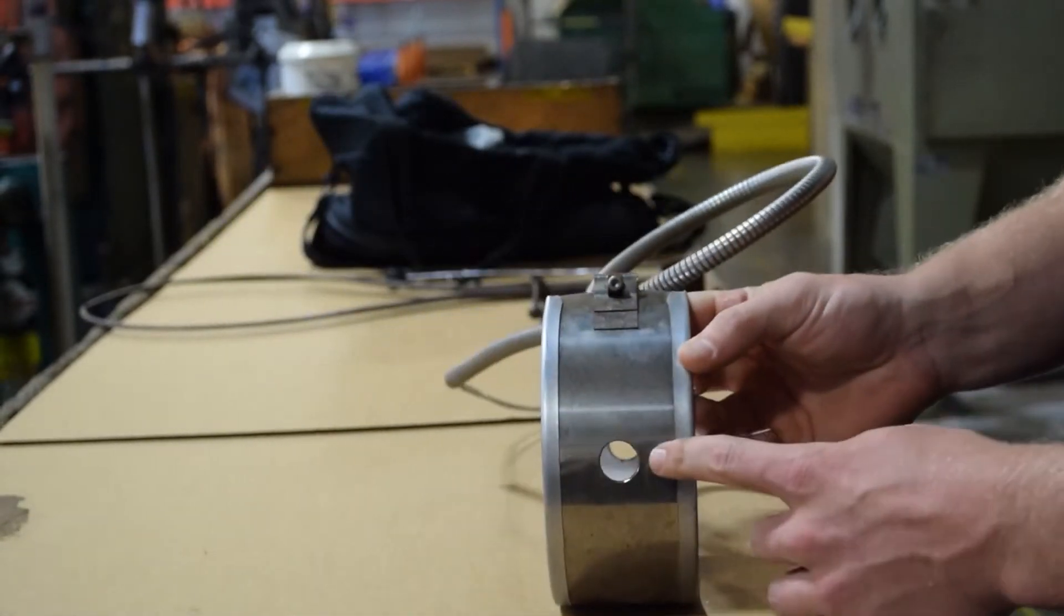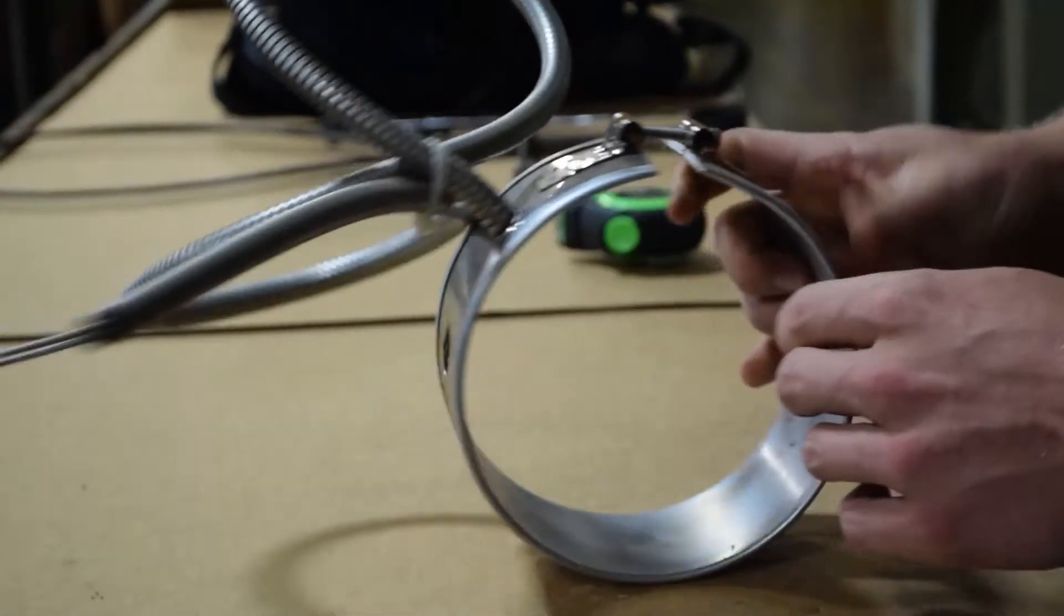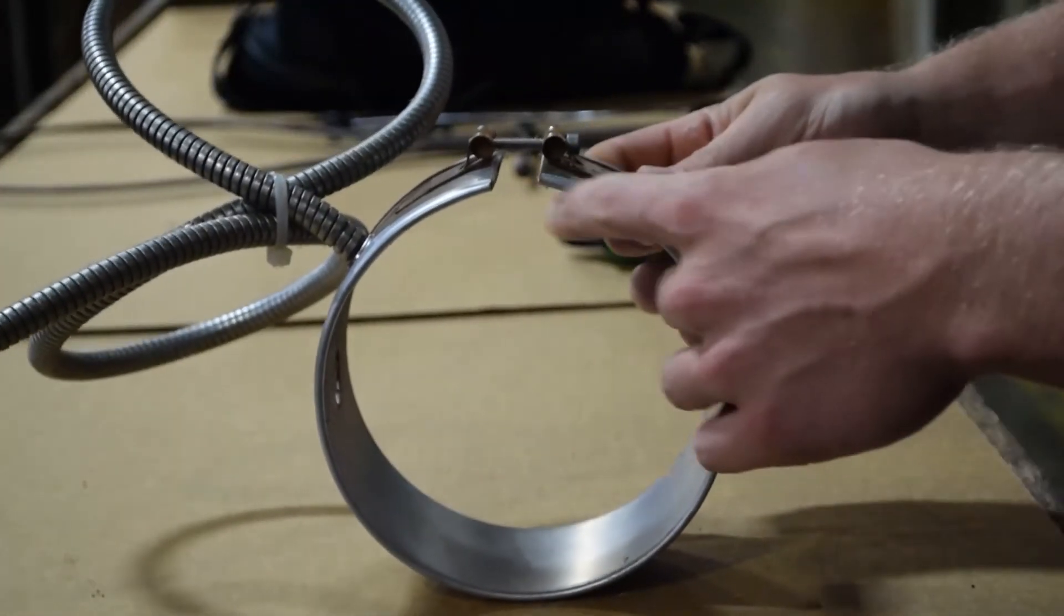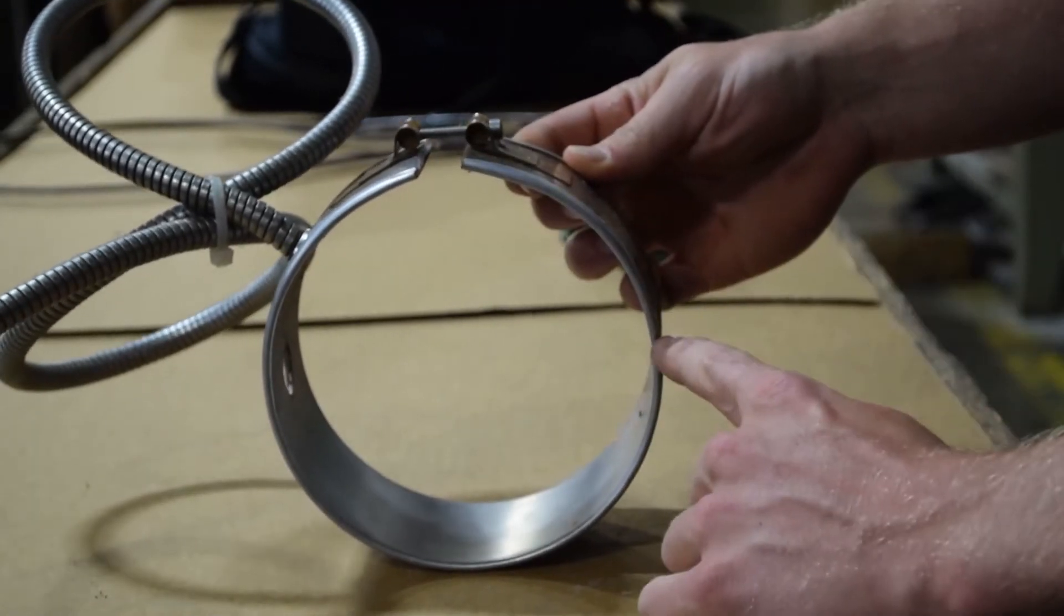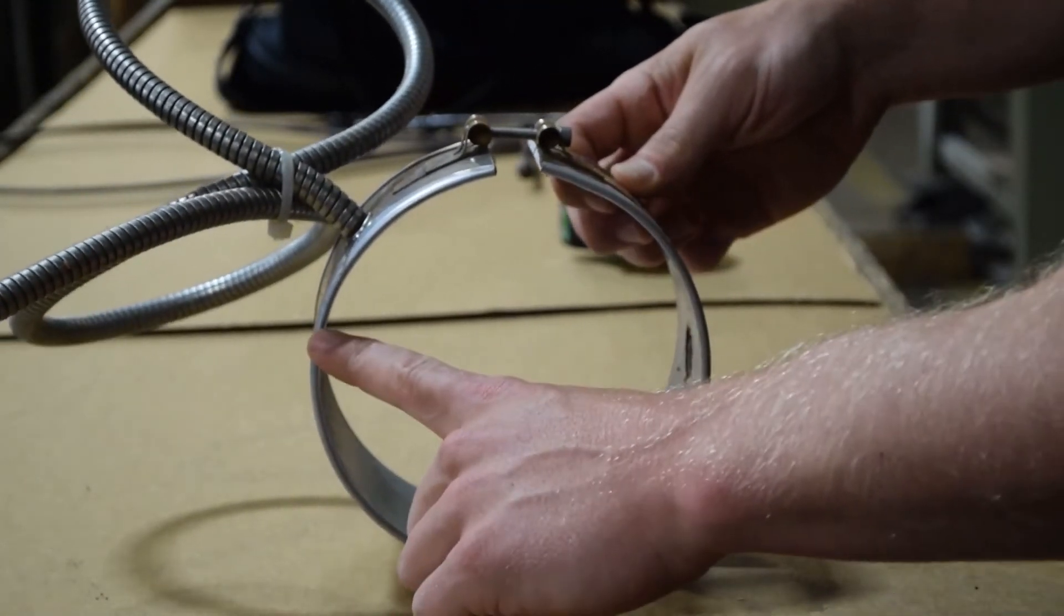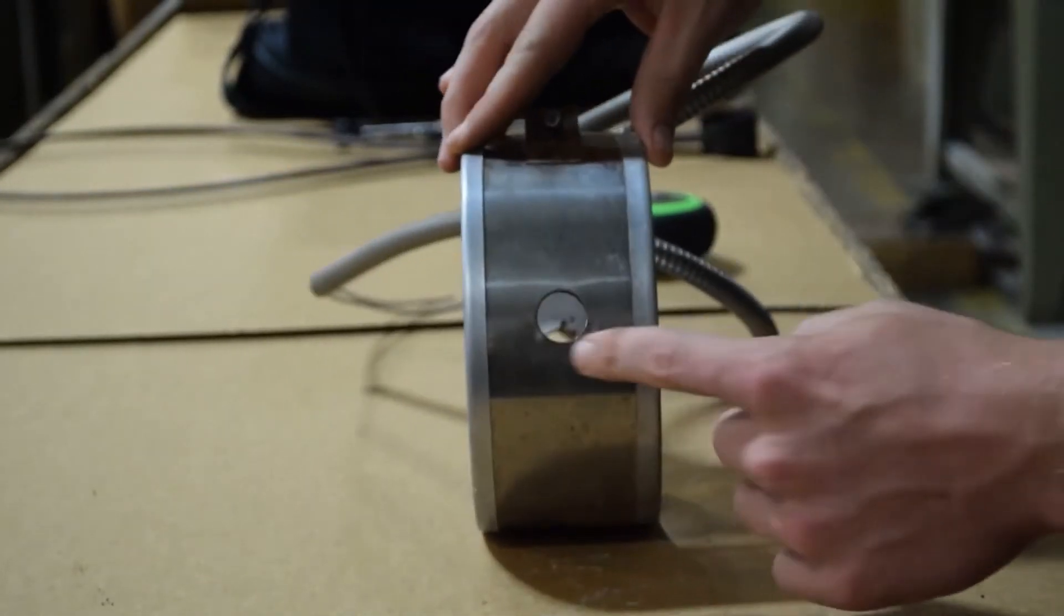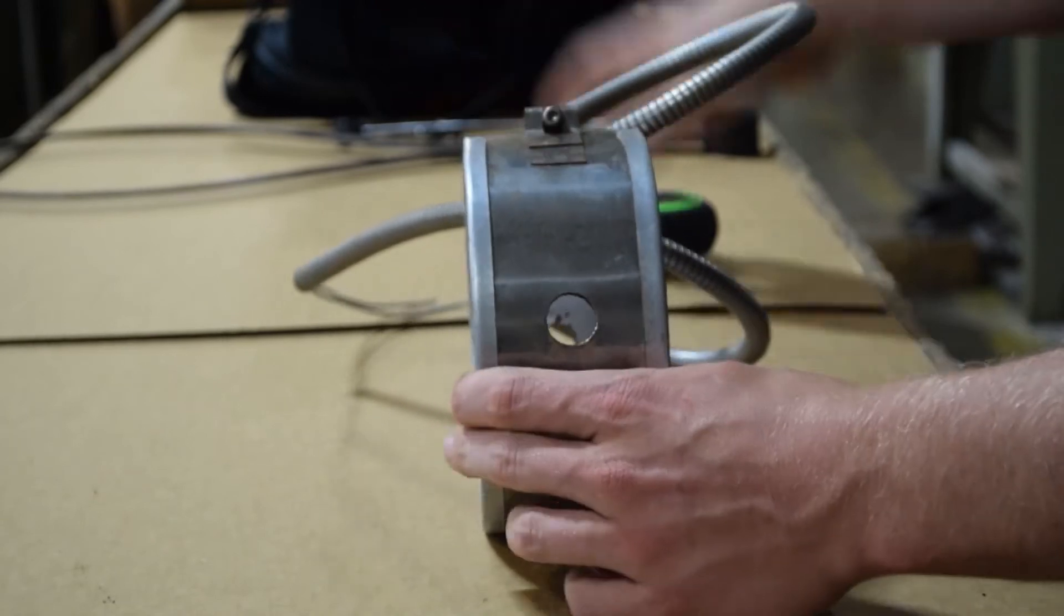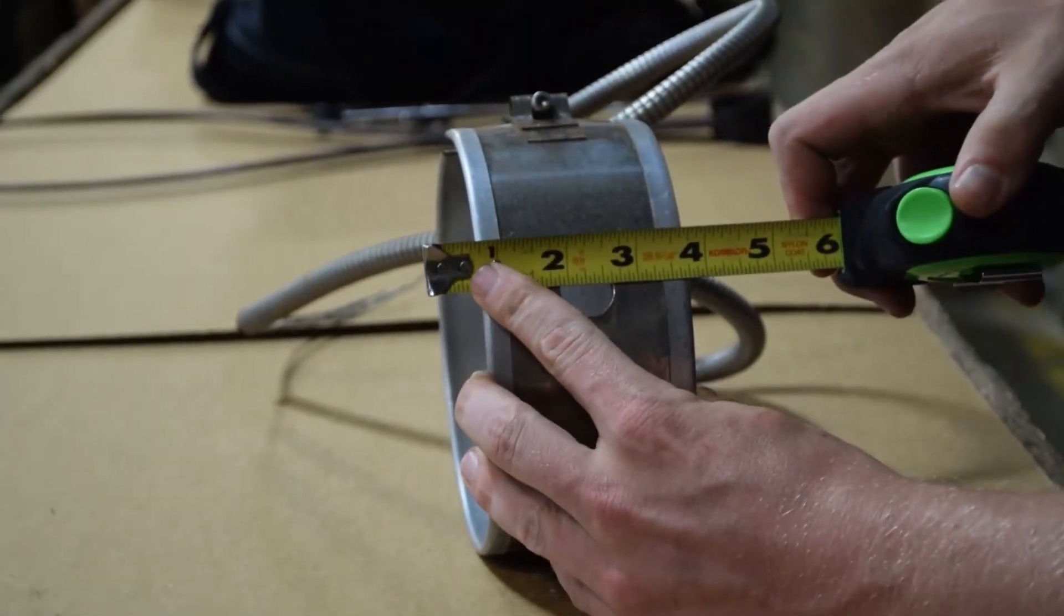We then clearly define all holes or notches. This heater has two holes. Holes are measured from the gap. This heater has one hole at 270 degrees and one hole at 90 degrees. Both of these holes are centered on the width of the band heater and both are 3 quarters of an inch in diameter.